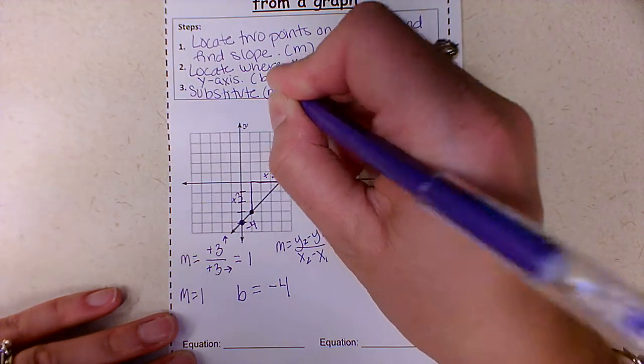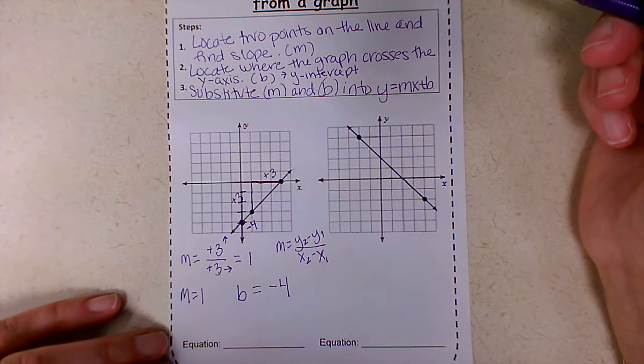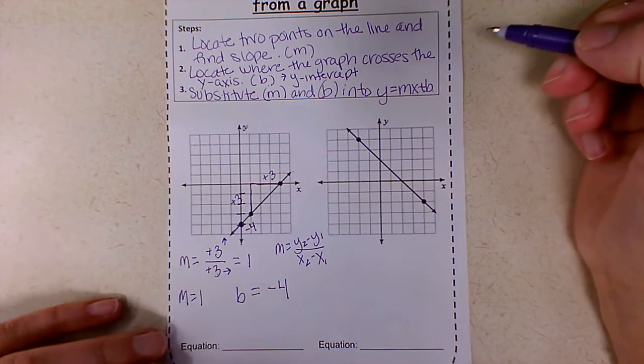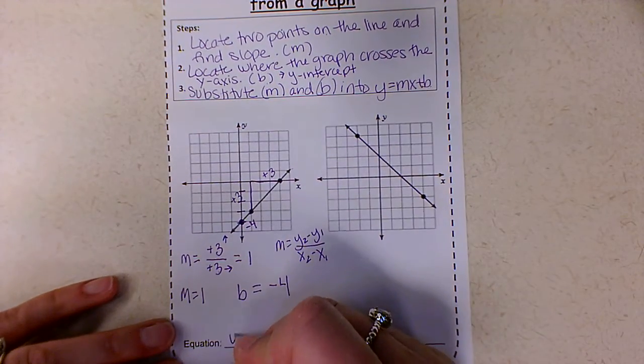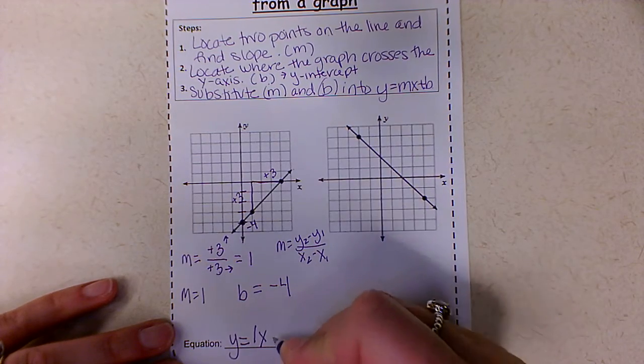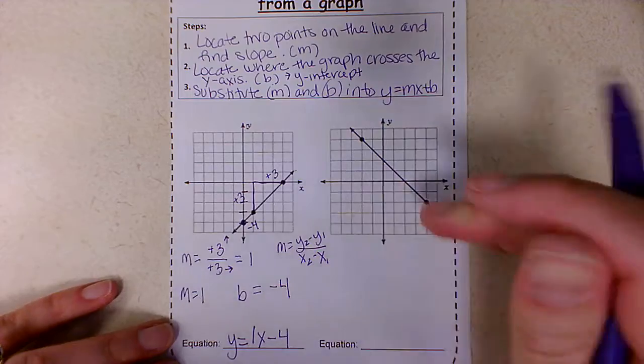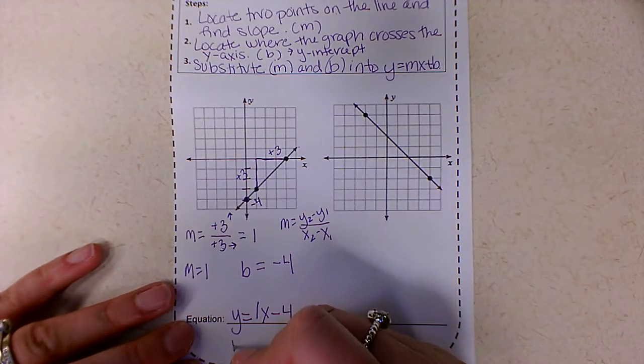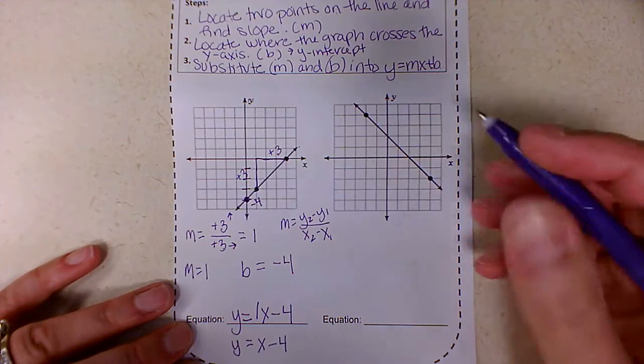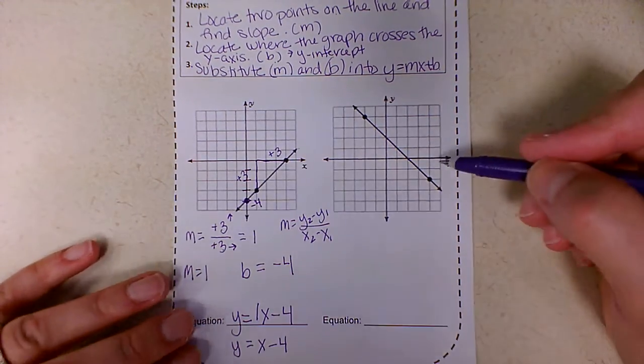And that is recognized by the variable b. And now I have to do my third step, which is substitute my m and my b into y equals mx plus b. So y equals my m, which is 1x my b minus four. So this negative does become your minus four. Now you could write this as y equals x minus four. That's absolutely fine. I will accept either one. It does not matter.